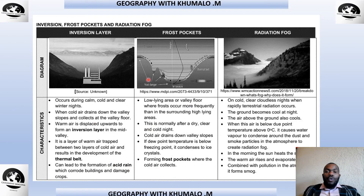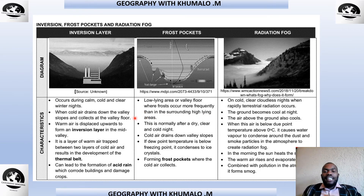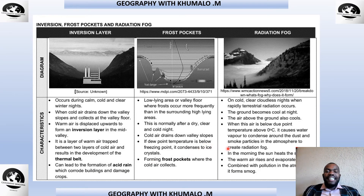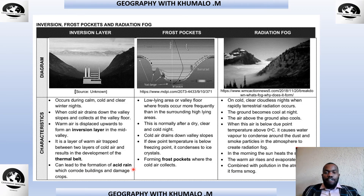The frost pocket is the low-lying area or the valley floor where frost occurs more frequently than in the surrounding high-lying areas. This normally occurs after a dry, clear, cold night. Cold air drains down to the valley floor. If the dew point temperature is below freezing point, it condenses to ice crystals, forming frost pockets where the cold air collects.